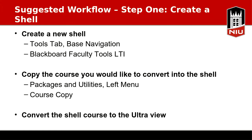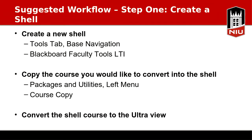Before talking about the suggested workflow, I want to address Nick's question. When you convert your course to Ultra, the copy process is now different. In original view, if you wanted to copy assessments, you had to copy everything from that course into your new course and then get rid of what you didn't want. A new feature with Ultra is that when you go to copy things, you can copy specific content — not entire content areas. For example, if you have an Ultra course you're copying from, you can pick a specific piece of content and bring it into your new Ultra course.